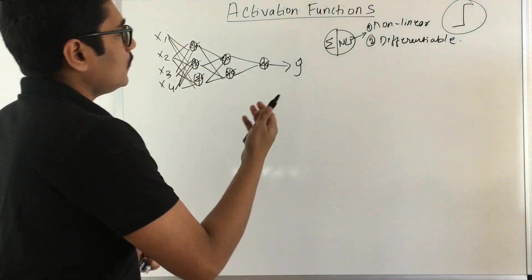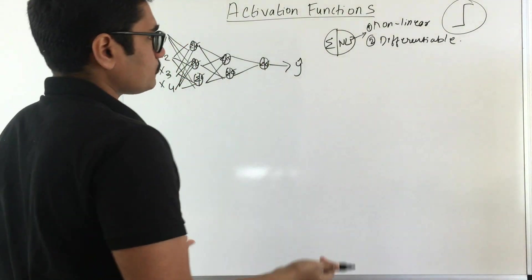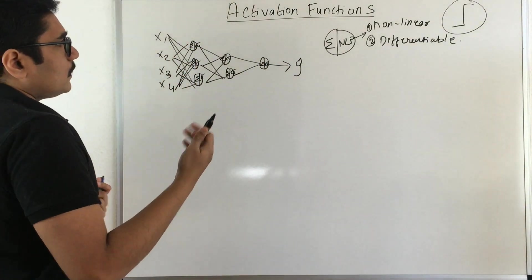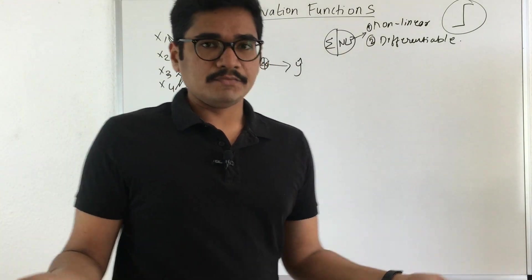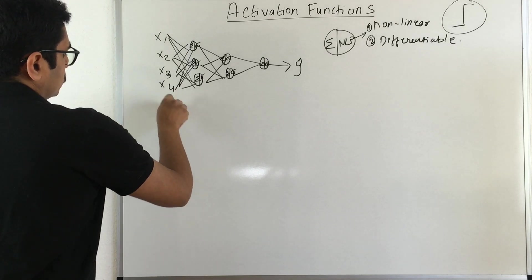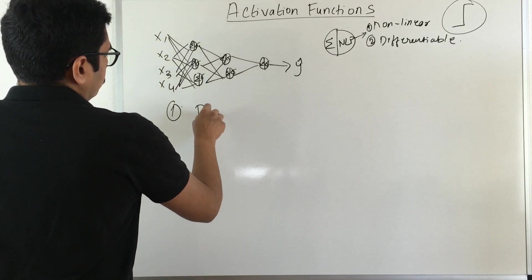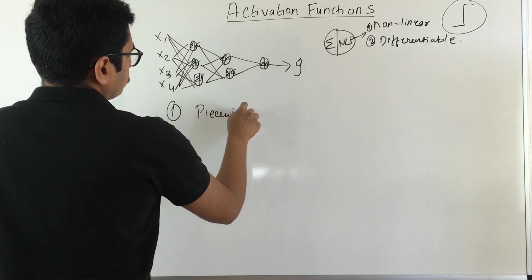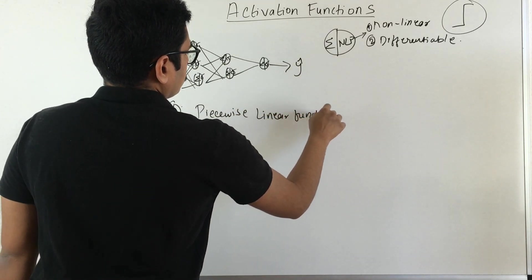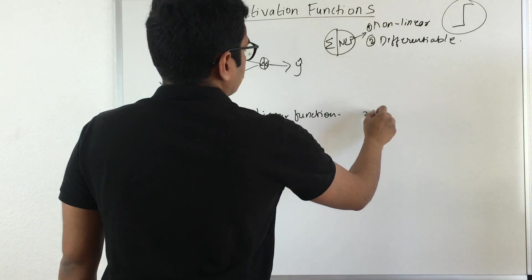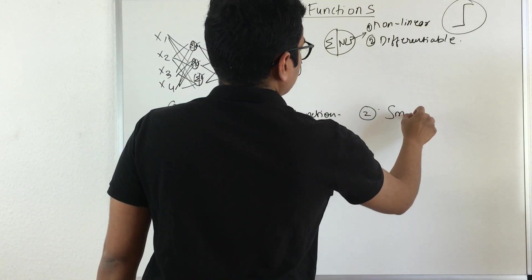Now in the literature for neural networks we have two categories of activation functions. One section says it is a piecewise linear function, and the other section is called smooth functions.